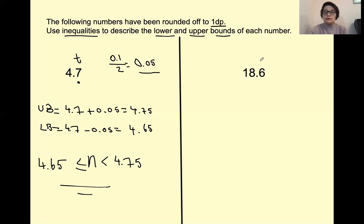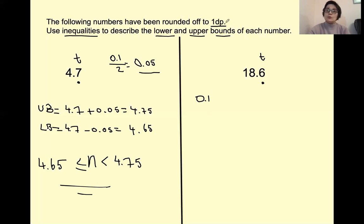One decimal point — this is the one decimal point, and the place value of digit six is the tenths again, so 0.1. Don't get confused: whether the digit is 0.7 or 0.6, the place value is still going to be 0.1 — it's the tenths, one decimal point. So half of 0.1 is 0.05, and we follow exactly the same strategy.